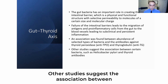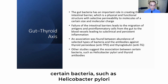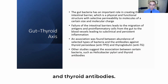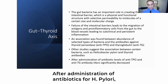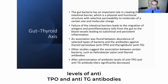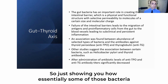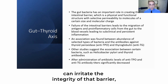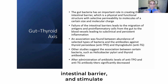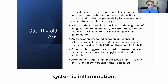Other studies suggest an association between certain bacteria, such as Helicobacter pylori, and thyroid antibodies. After administration of antibiotics for H. pylori, levels of anti-TPO and anti-TG antibody titers significantly decrease. This shows how some of those bacteria can irritate the integrity of the intestinal barrier and stimulate systemic inflammation.